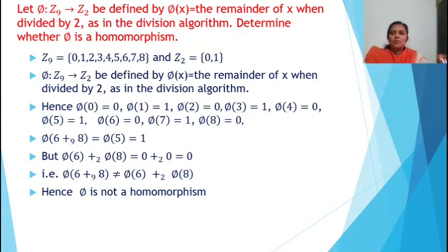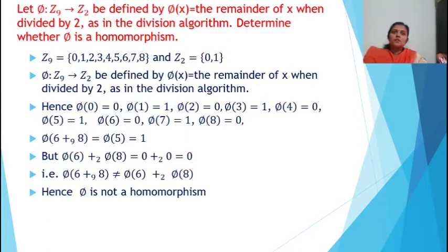Now we have a problem. Let phi from Z9 to Z2 be defined by phi(x) = the remainder of x when divided by 2, as in the division algorithm. Determine whether phi is a homomorphism. Here Z9 = {0, 1, 2, 3, 4, 5, 6, 7, 8} and the composition is addition modulo 9.